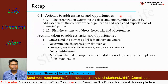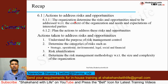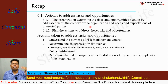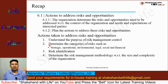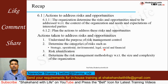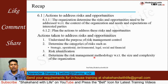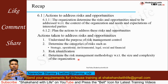Here is a quick recap. Clause 6.1 is about actions to address risks and opportunities. Sub-clause 6.1.1: the organization determines risks and opportunities with respect to context and needs of interested parties. Sub-clause 6.1.2: plan actions to address these risks and opportunities. The steps are: (1) understand the purpose of risk management control, (2) determine risk categories (strategic, operational, environmental, legal, social, financial), (3) identify the risks, and (4) determine the risk management methodology with respect to the size and complexity of the organization.